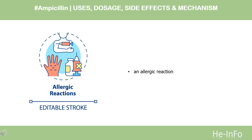Ampicillin is contraindicated in those with a hypersensitivity to penicillins, as they can cause fatal anaphylactic reactions. Hypersensitivity reactions can include frequent skin rashes and hives, exfoliative dermatitis, erythema multiforme, and a temporary decrease in both red and white blood cells. Ampicillin is not recommended in people with concurrent mononucleosis, as over 40% of patients develop a skin rash.